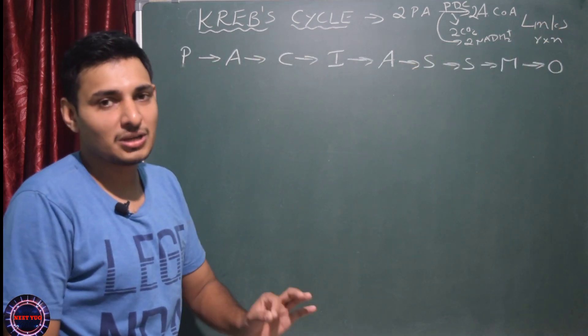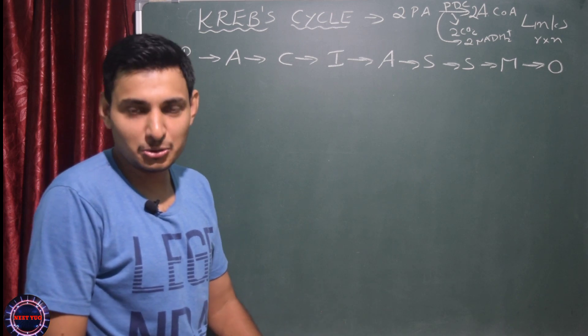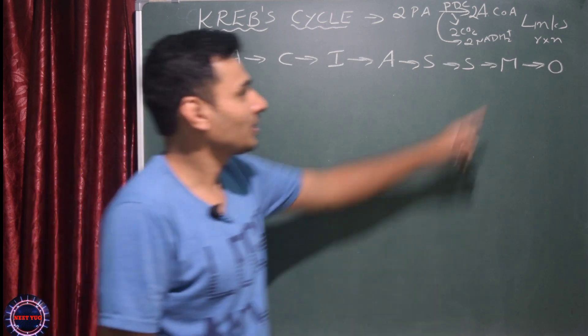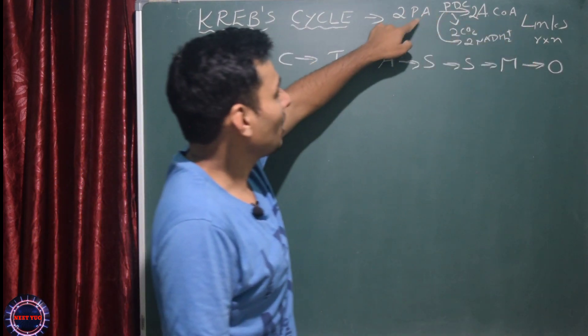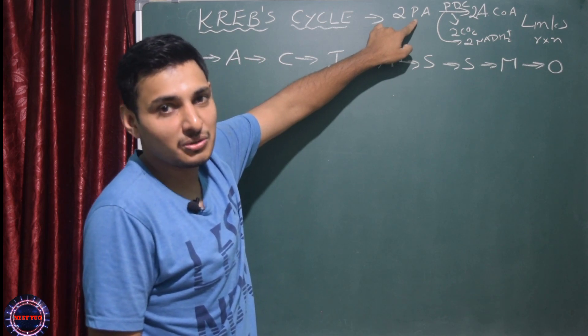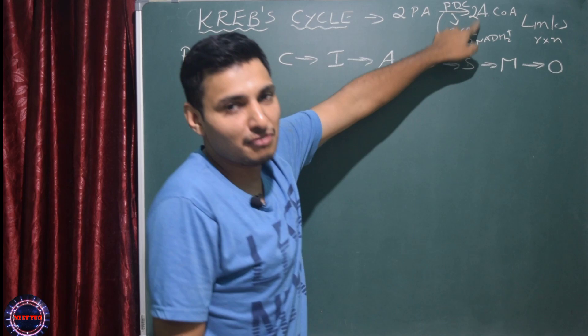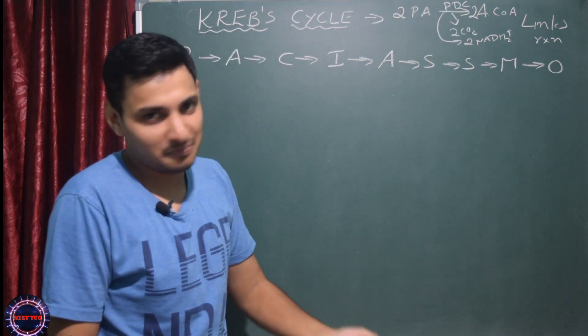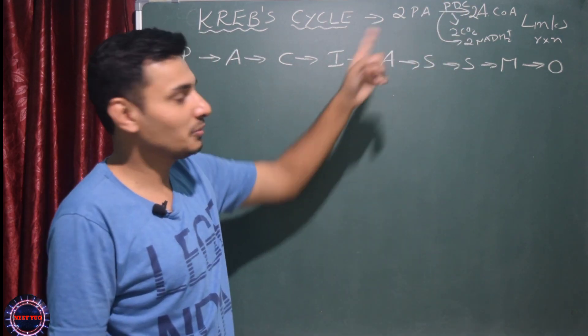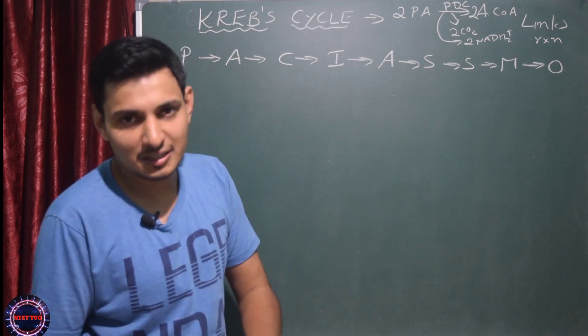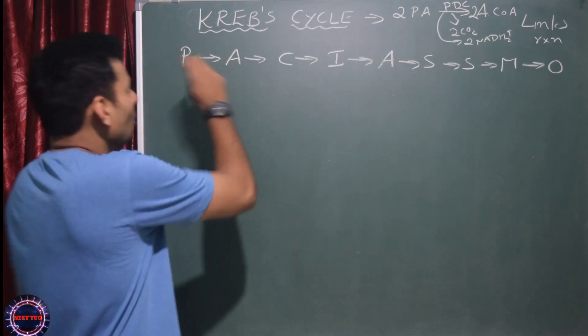Normally they ask: what is the first step of Krebs cycle? First step of Krebs cycle is not this. This is actually called links reaction. Name the reaction which connects anaerobic respiration to aerobic respiration: links reaction. It takes place in mitochondrial matrix.